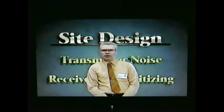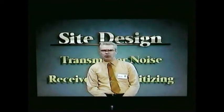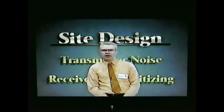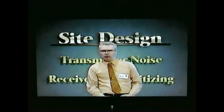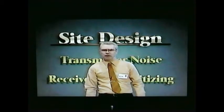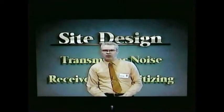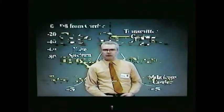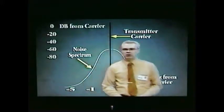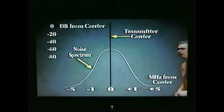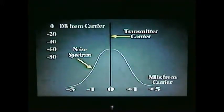All transmitters radiate a spectrum of noise surrounding the carrier, and this spectrum of noise extends out several megahertz away from the carrier. If it falls on a receiver frequency in use at the site, it could be enough to cover or capture the desired signal to this receiver.